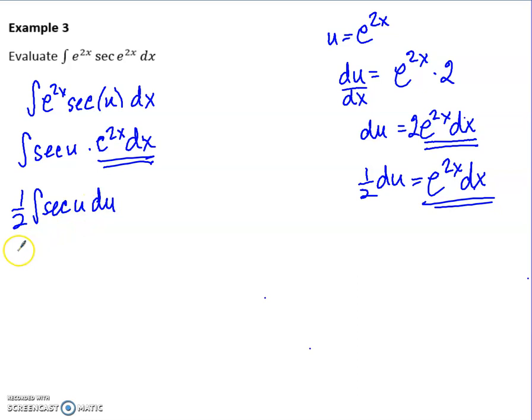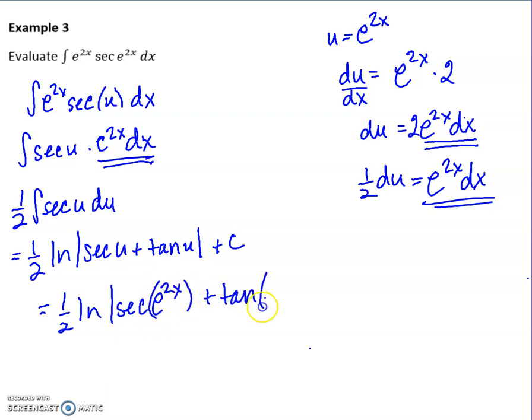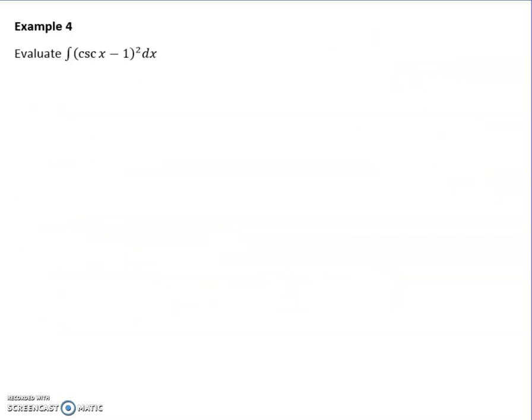Now I'm ready to replace. I'll bring that 1 half out front. I've got sec u du. I can do that. It is a weird integral, but you can do it. It's 1 half ln absolute value of secant of u plus tangent of u plus c. And then that last step is just to replace your u back in. So e to the 2x plus tan e to the 2x, absolute value, and then plus c.